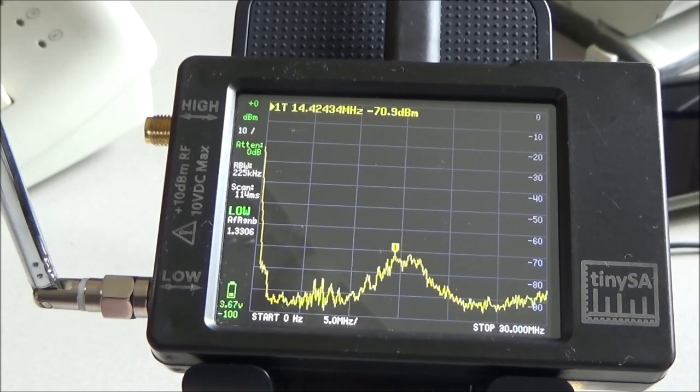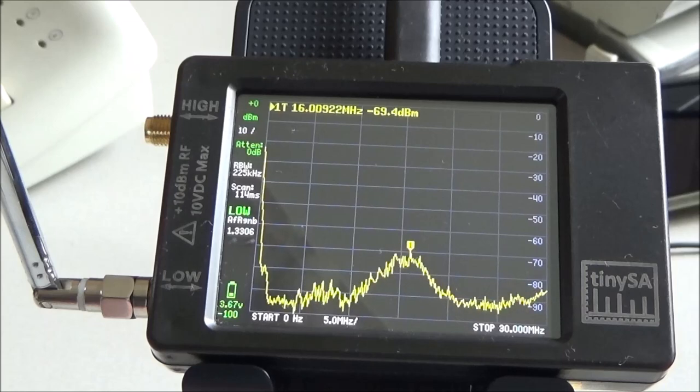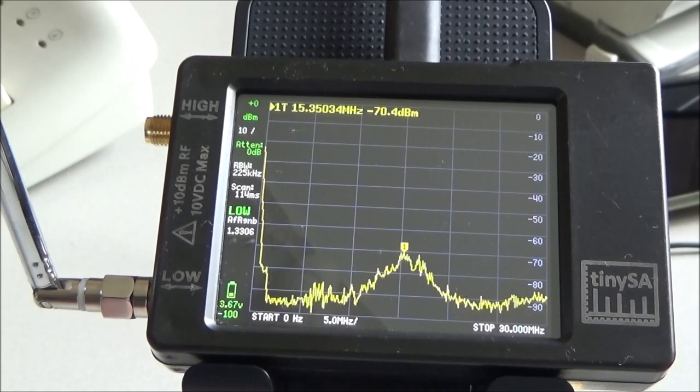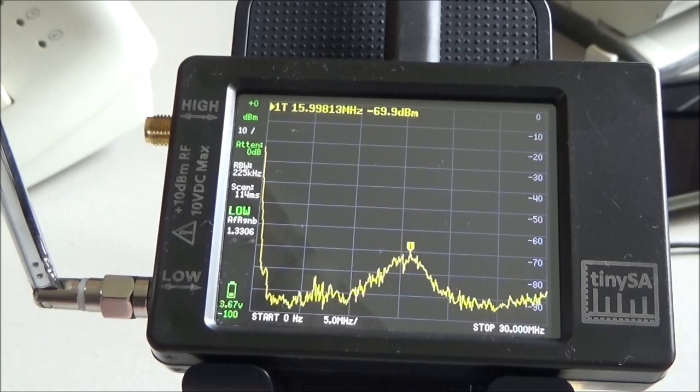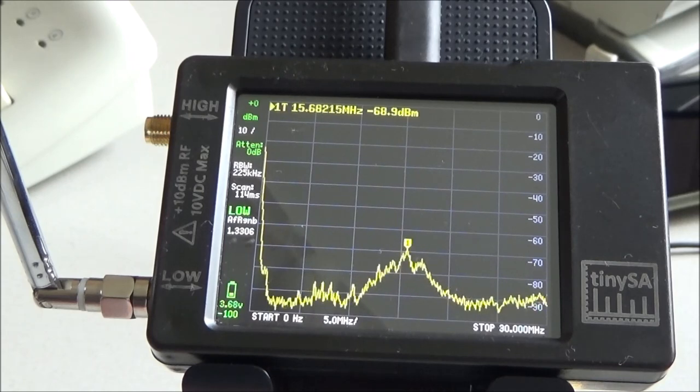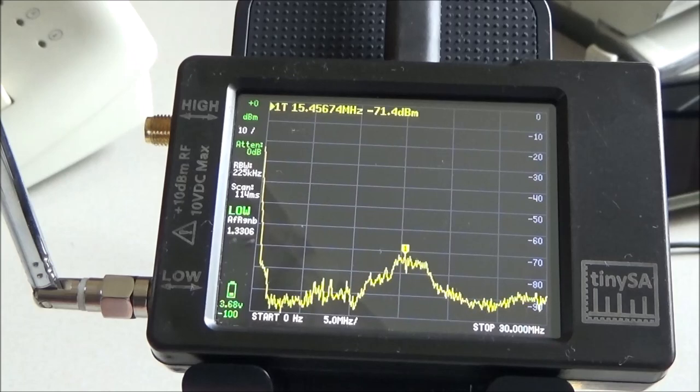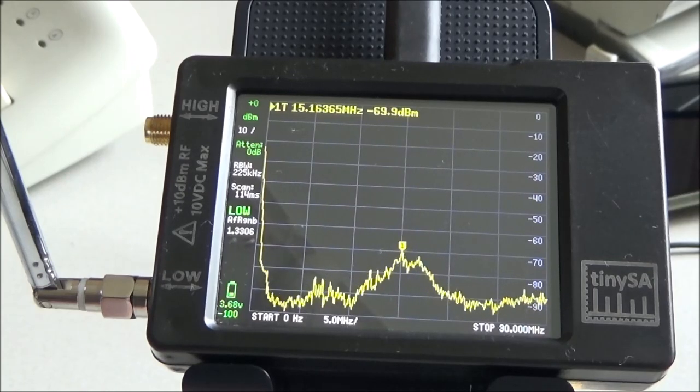And the TinySA is specified to have a noise floor at minus 90 dBm with 0 dB attenuator and its widest resolution bandwidth. But as you can see, there's much, much more noise here. So the question is, why is there so much noise?